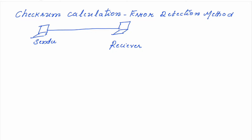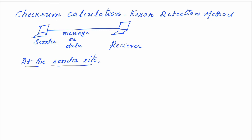Let us see what are the different steps carried out at the sender side and what are the different steps carried out at the receiver side. We will assume there is some message, or data, that travels from the sender to the receiver. Some bits may get corrupted during transmission or some bits may be lost. The receiver has to find out whether there is an error in this data or not. First, let us see all the steps carried out at the sender side.